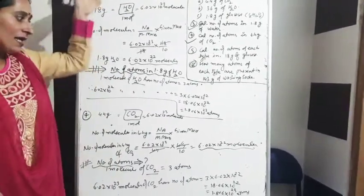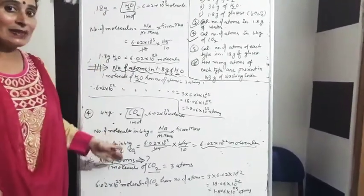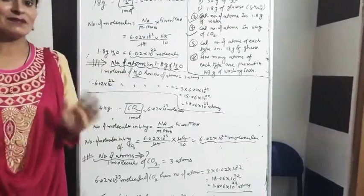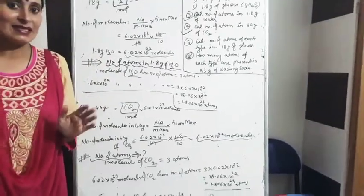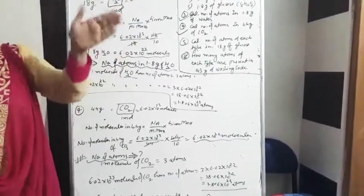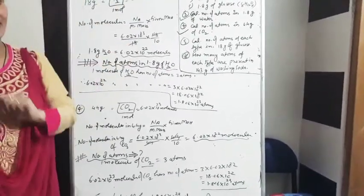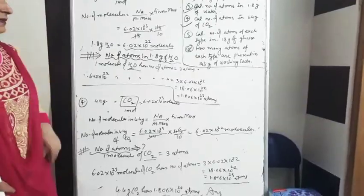जब entity molecule है और atoms पूछी गई हैं: पहले molecules निकालेंगे, फिर एक molecule में कितनी atoms हैं वो लिखेंगे, और उसके बाद multiply करेंगे — आपके पास number of atoms आ जाएंगी. अब next level — एक step आगे.